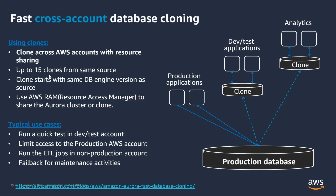One advantage of the fast cloning feature is that you can create clones and share them across AWS accounts. The clone cluster, however, must be in the same region as the source Aurora cluster. Aurora integrates with AWS Resource Access Manager (AWS RAM), which enables you to securely share your DB clusters with other accounts for cloning. You can create up to 15 clones for the same source cluster.